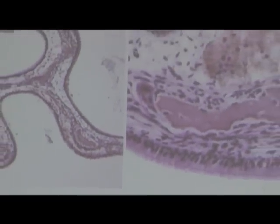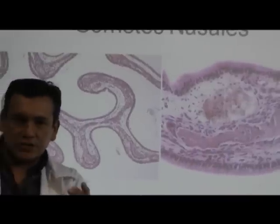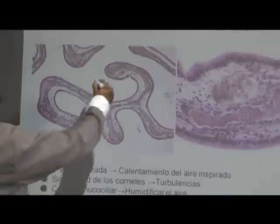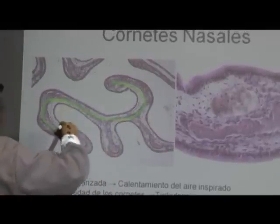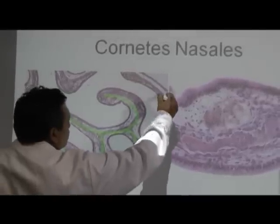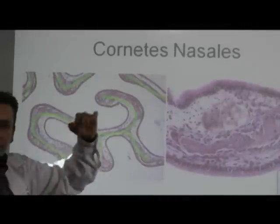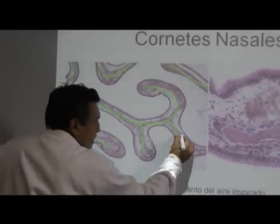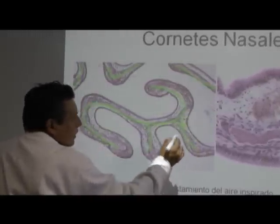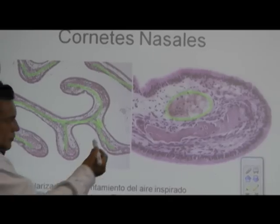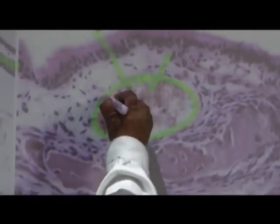Aquí estamos viendo una imagen microscópica de esas conchas o cornetes nasales. Si nosotros podemos percibir, estas conchas nasales tienen sinuosidades. Lo que estoy marcando corresponde a ese tejido óseo laminar que le va a dar esa estructura en forma de conchas. Posteriormente, va a haber tejido fibrovascular con gran cantidad de vasos sanguíneos. Estos vasos sanguíneos son muy importantes debido a que van a irradiar calor hacia el exterior y van a calentar ese aire inspirado.